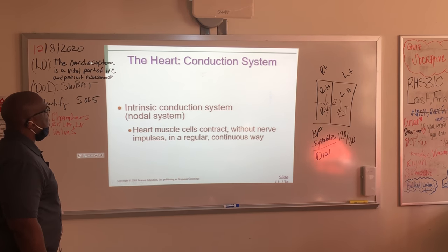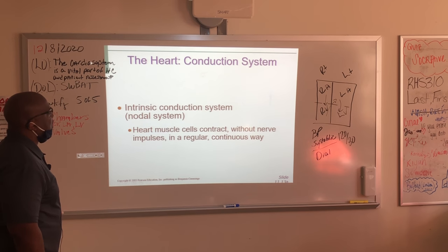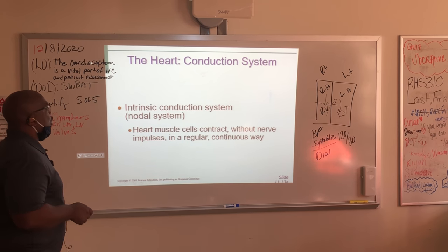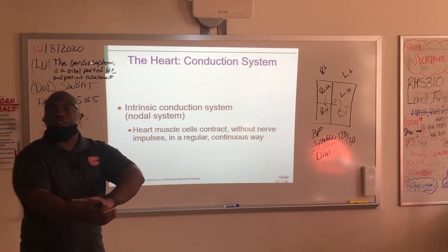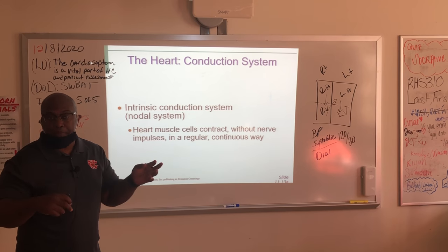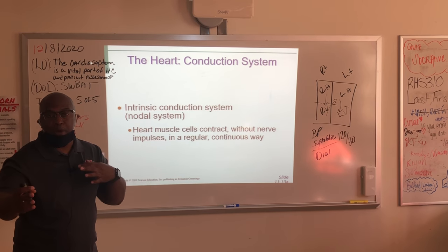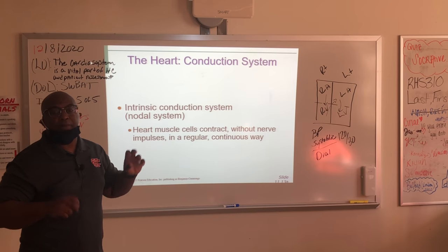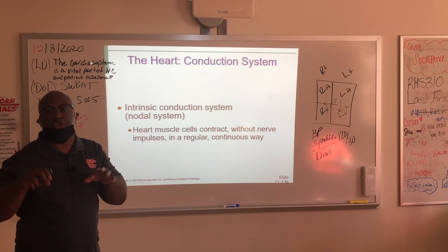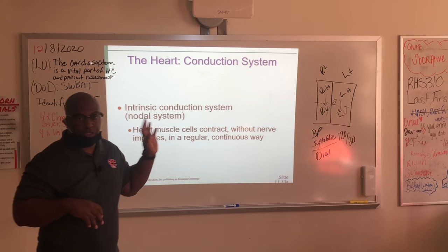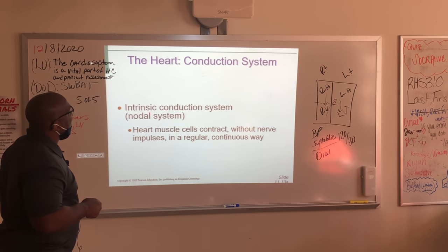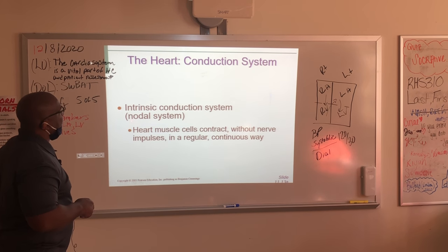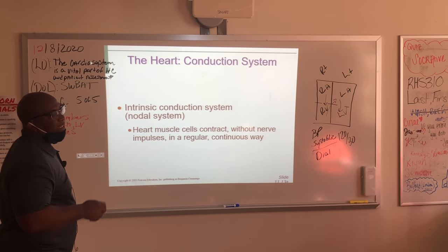Heart muscle cells contract without nerve impulses, in a regular continuous pathway. Nerve impulses are in your skeletal muscles — you have to have an impulse to make your arm move. The heart just runs off its own electrical circuit, and we're going to get to that electrical circuit in just a second.